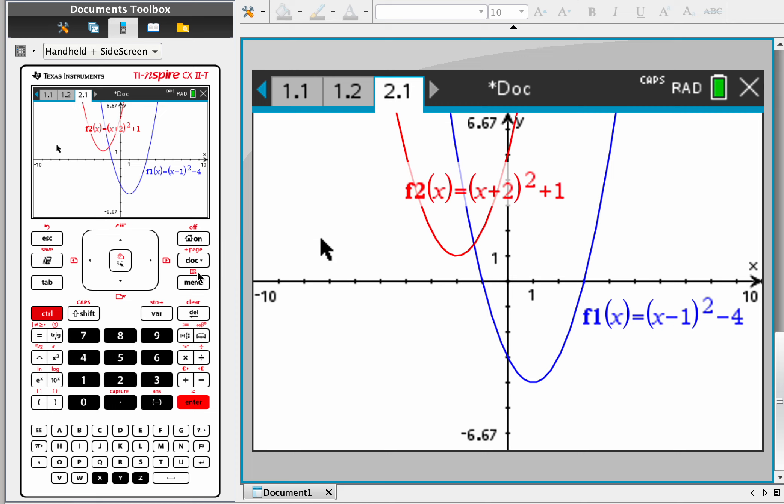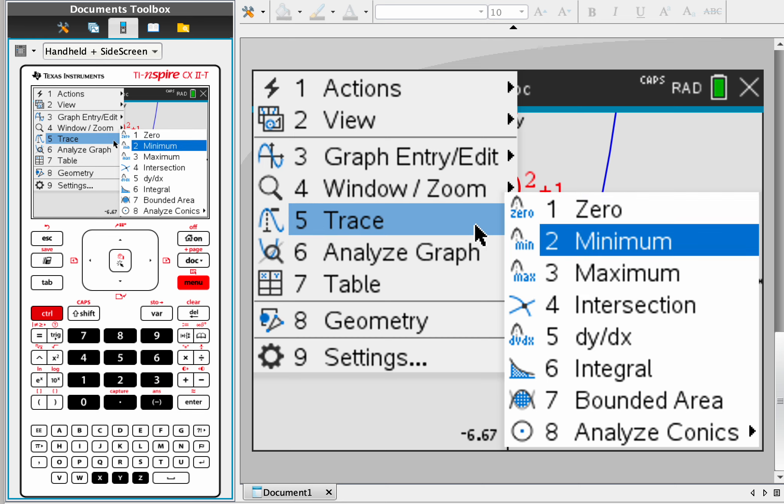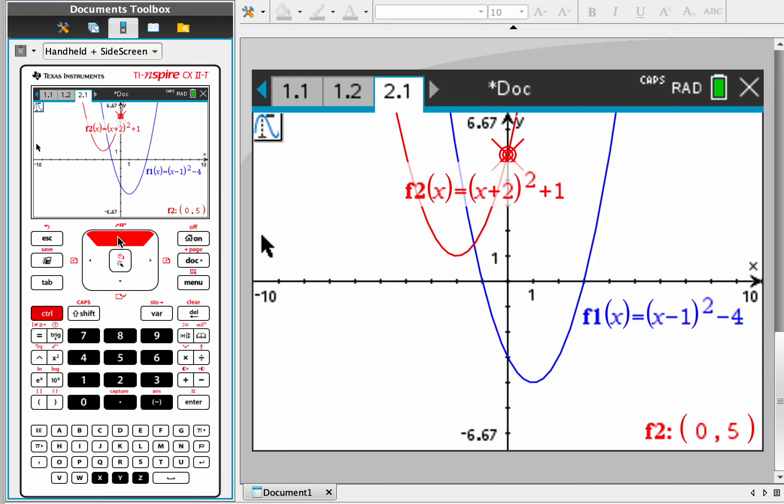So we just want to find the x and y intercepts of both, so let's just do the y intercepts first. We go to trace and graph trace. Now notice it's already on the y intercept in this case, so that's easy. But how do we move to the other curve? Well, just simply press up or down, and it goes back and forth.